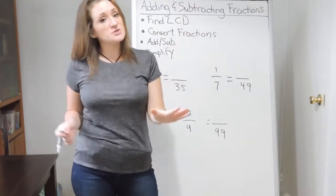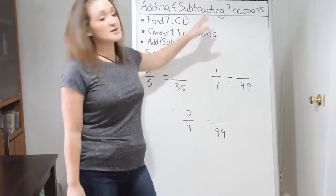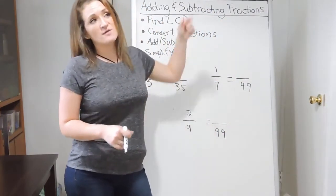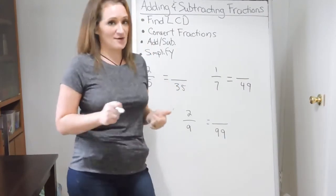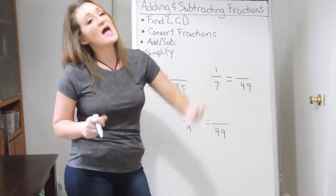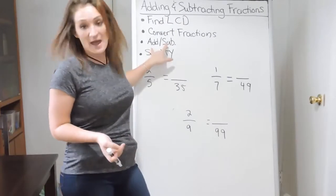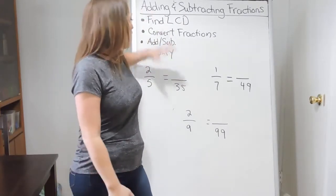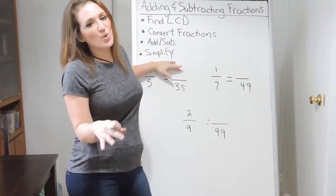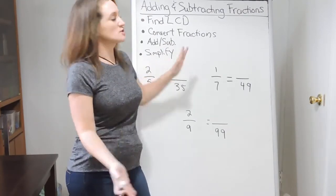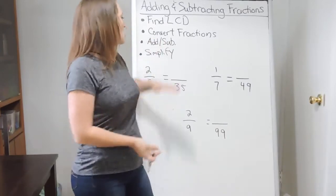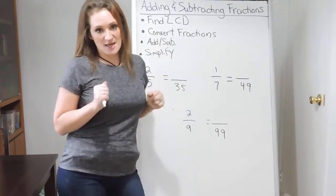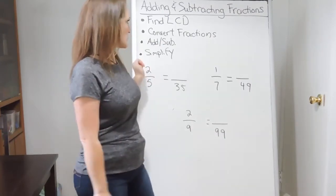After finding the common denominator, your next step is to convert your fractions so they have common denominators. Then you can finally add or subtract the fractions depending on which calculation you're doing. And always, no matter what calculation you're doing with fractions — whether adding, subtracting, multiplying, or dividing — you must always simplify your fraction in the end. Those are our four general steps.